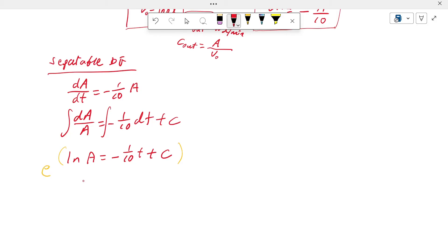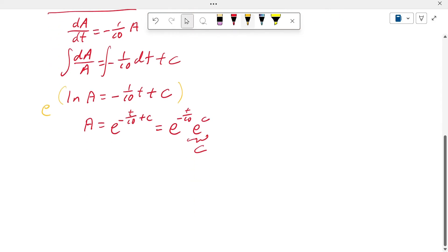And then they give us e^(ln A) is equal to A. Here we have the exponential minus T divided by 10 plus C. This can be written as minus T divided by 10 exponential C.